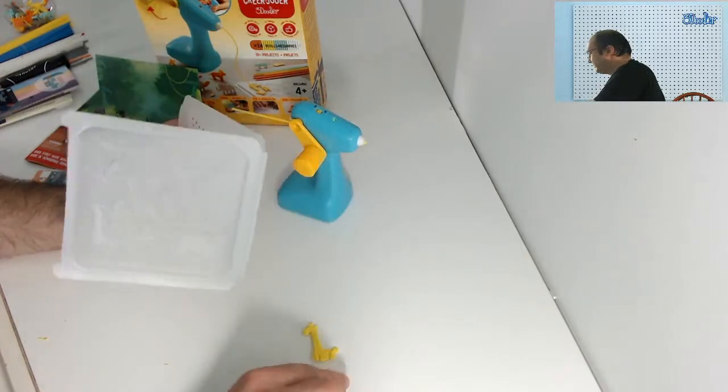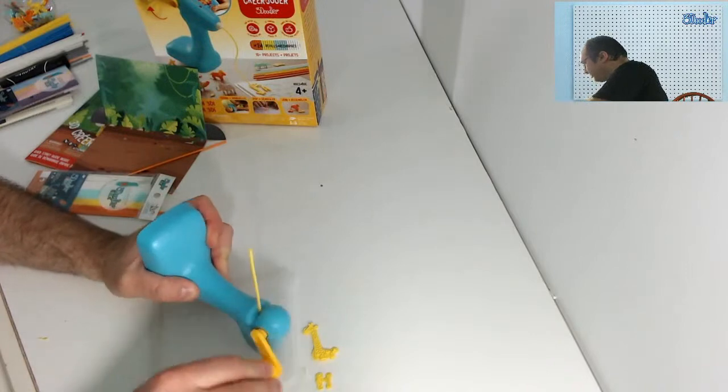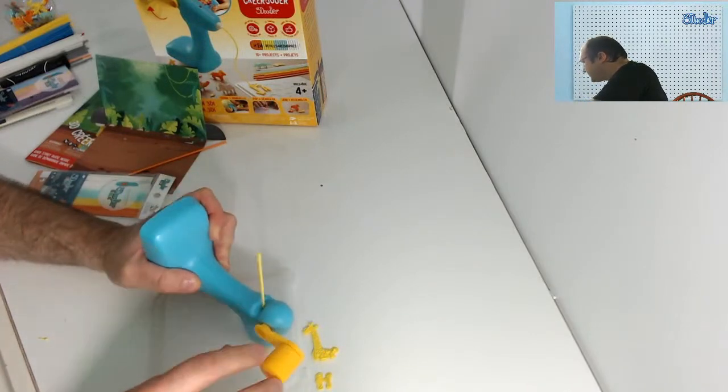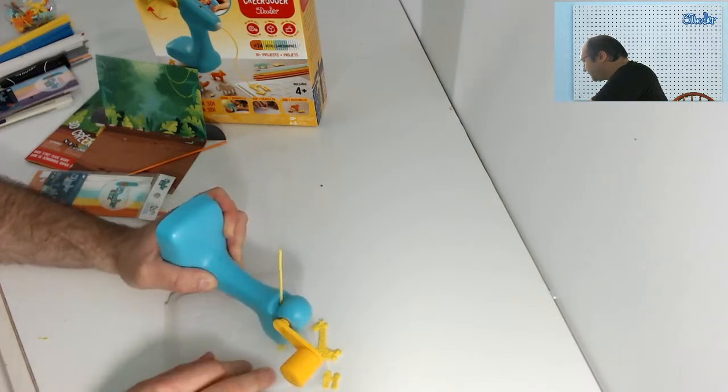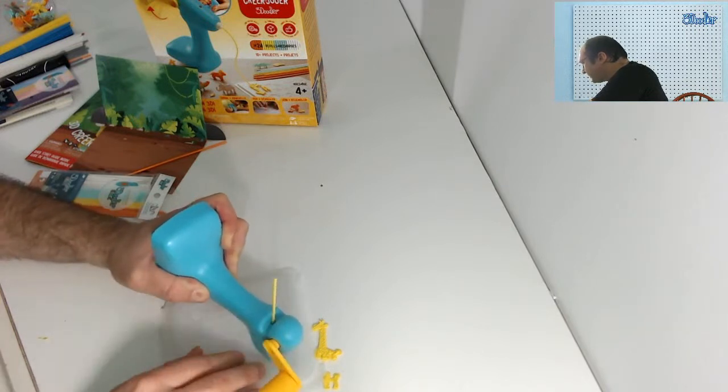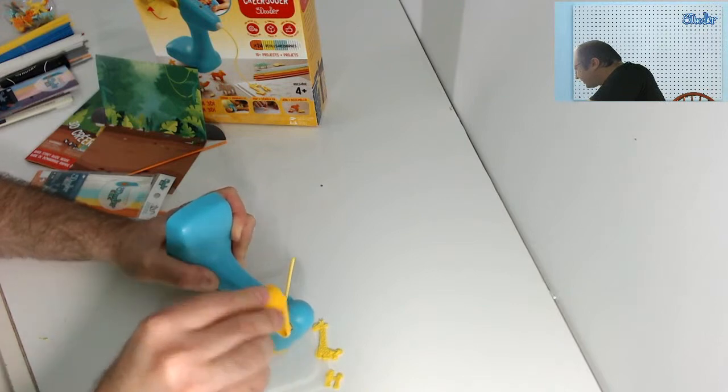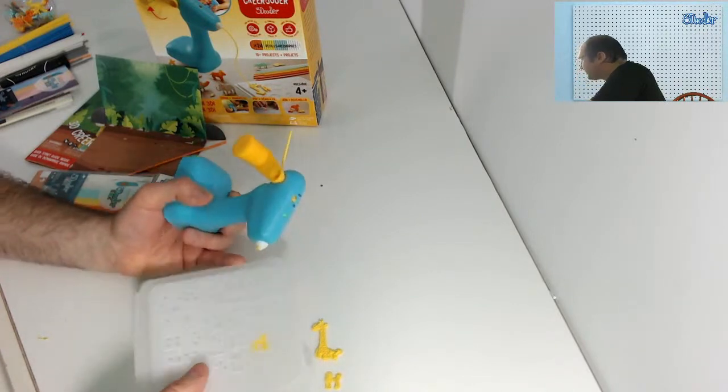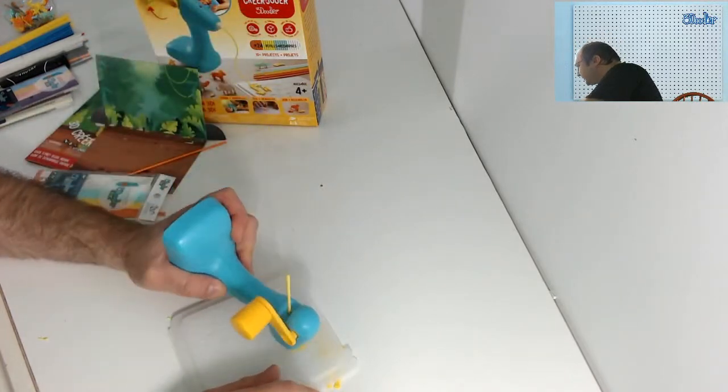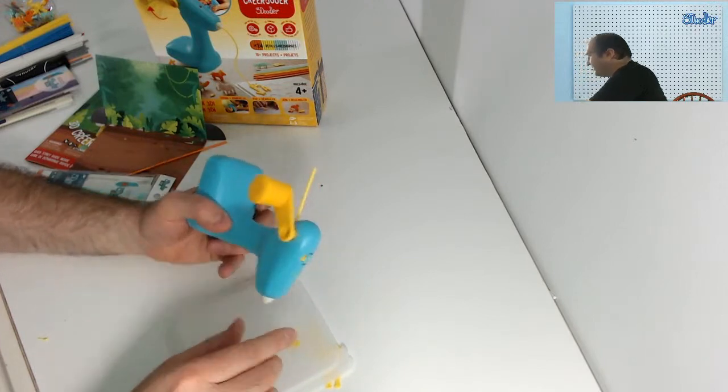I'm going to make another set of legs. The legs are one of the fastest and easiest pieces to make. I can see if I haven't filled something enough. For example, you can see I didn't fill that all the way, so I can simply stick it in and fill it more.